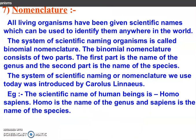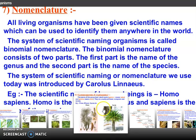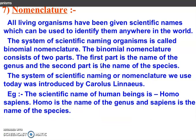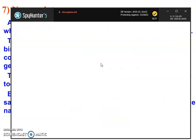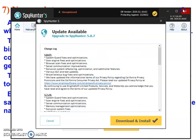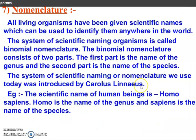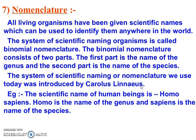Last is about nomenclature. If you want to give a name to a particular living organism, the process is called nomenclature. When two names are given, that is called binomial nomenclature — one is the genus and the other is the species. This system was discovered by Carolus Linnaeus, who gave the scientific name of human beings as Homo sapiens, where Homo is the genus and sapiens is the species.